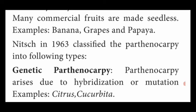Parthenocarpy is also divided into types according to the scientist Nitch in 1963. First one is genetic parthenocarpy - that means seedless fruits are produced by the process of mutation or hybridization - that is said to be genetic parthenocarpy. Examples: Citrus and Cucurbita (cucumber plants). In those plants fruits arise due to the hybridization process or mutational process.